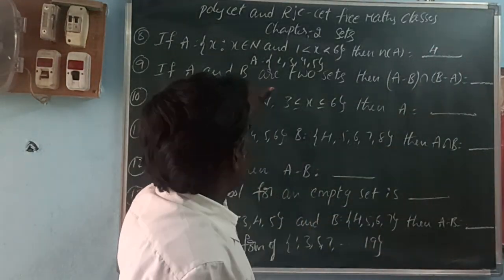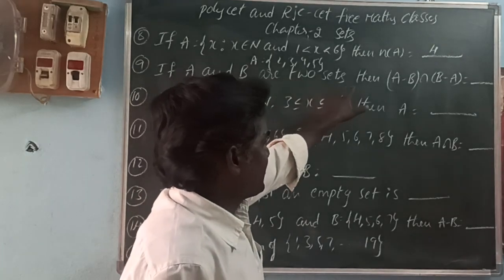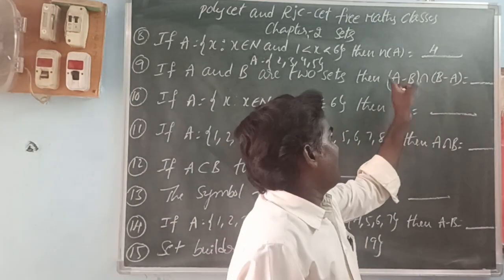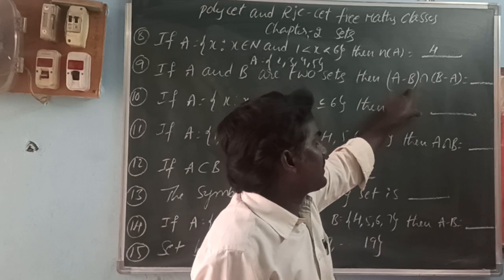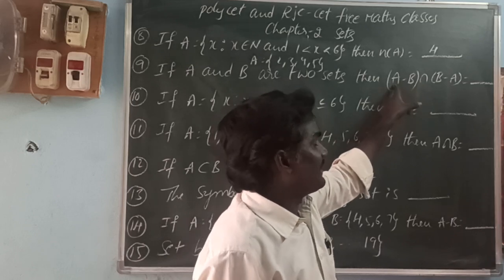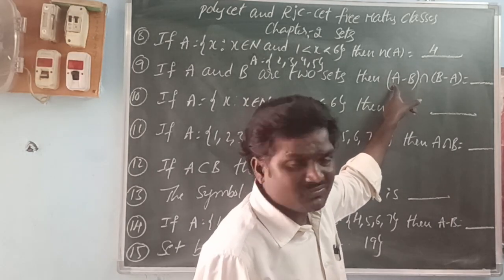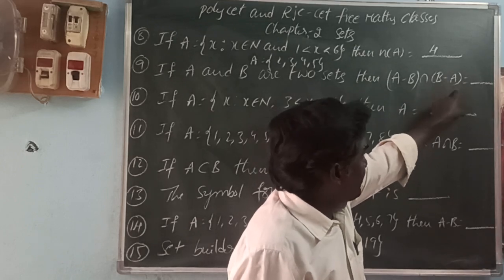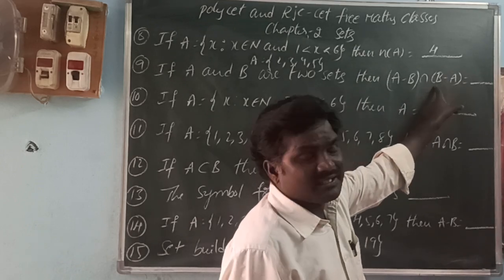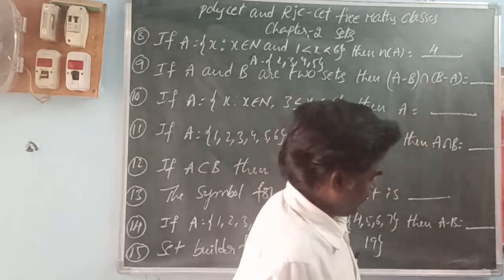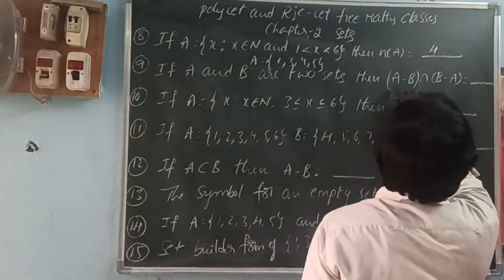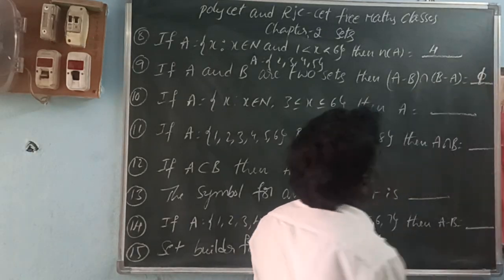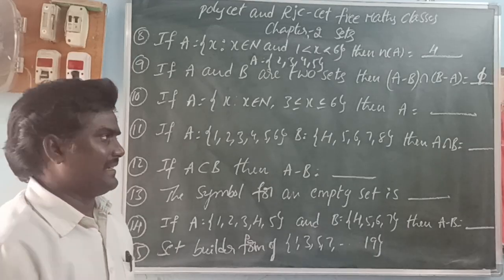Next: if A and B are two sets, then A minus B intersection B minus A. A minus B means the elements in A with B's elements removed. B minus A means the elements in B with A's elements removed. So A minus B intersection B minus A — what are the common elements? Empty set, because there are none.